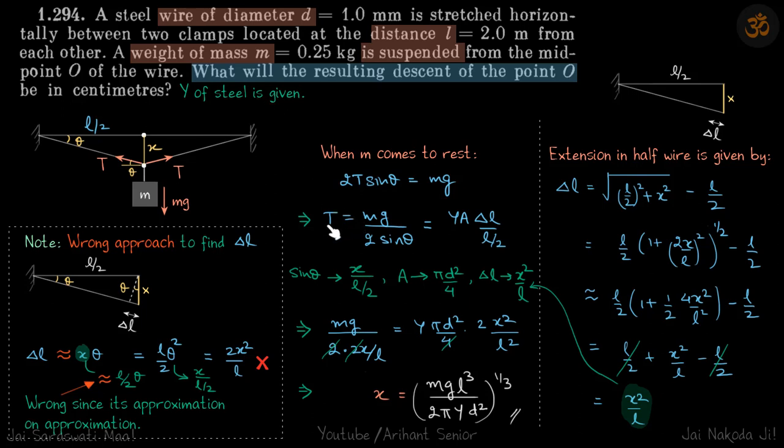We get rid of T by writing that as YA delta L by L. The original length was L by 2, so L becomes L by 2. Delta L by L by 2. Now in this equation, the value of sin theta.